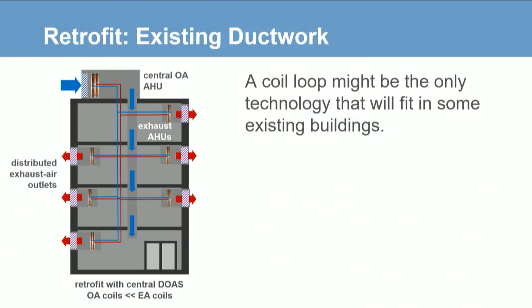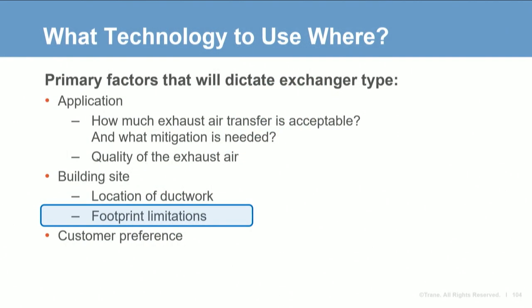The next set of factors are existing ductwork and footprint limitations. If you have an existing building with ducts and air inlet locations that cannot be moved, this often leads to using a coil loop. A 50 to 55% sensible recovery with a coil loop may not sound like much, but it will make a huge impact on peak heat demand in winter and what is required from a heat pump system. Another factor is space or footprint limitations — the answer is not as simple as one technology always fitting in a tight space, as the customer's goals for energy recovery combined with space limitations will result in different answers for different buildings.